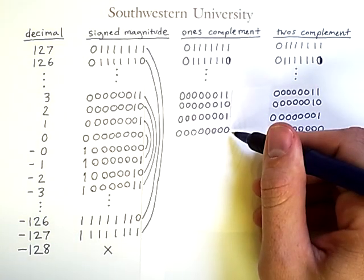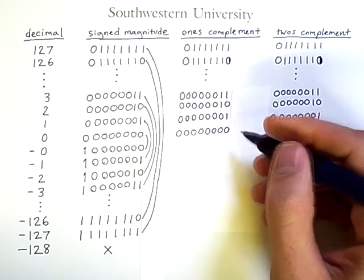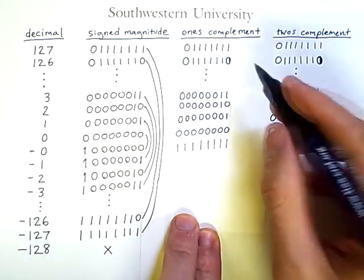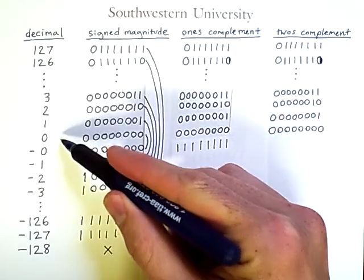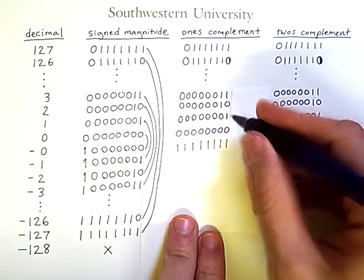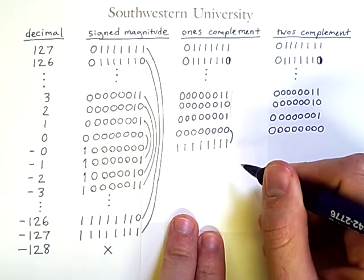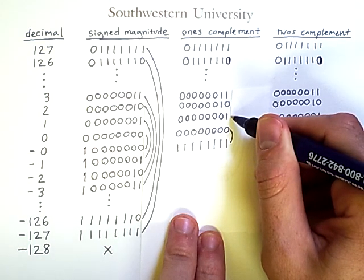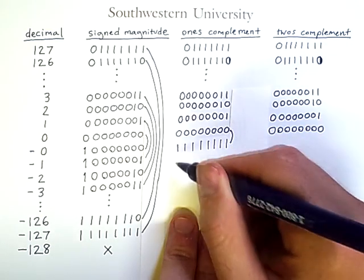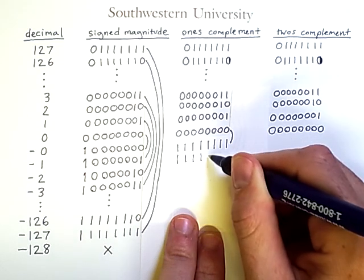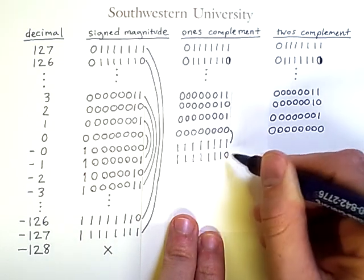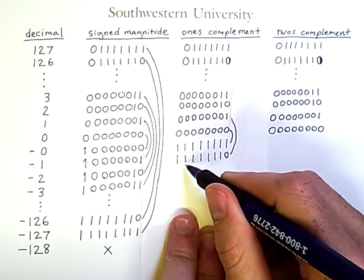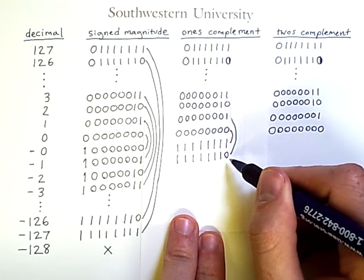If we take zero and replace each zero with a one, we get a sequence of eight ones. This shows that in one's complement representation, we still have two different representations for zero. If I take the representation for one and flip all of the bits, I get the sequence 1,1,1,1,1,1,1,0. In one's complement, the first bit is still a sign bit, and the remaining bits are the opposite of their positive counterpart.